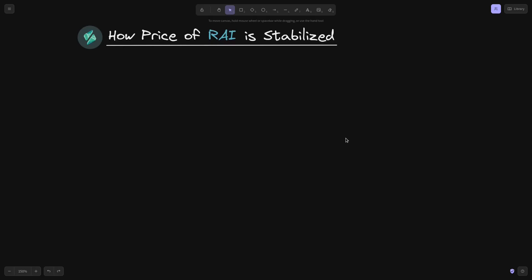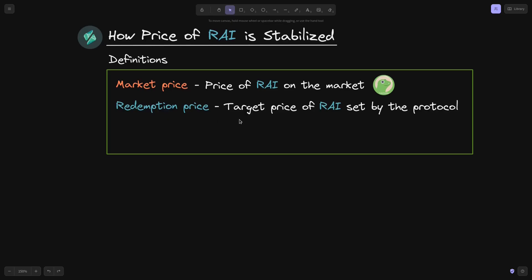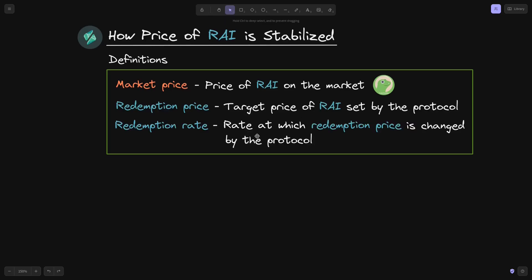The topic of this video is how the price of Rye is stabilized. The market price is the price of Rye on the market — for example, the price you see on CoinGecko, centralized exchanges, or a DEX like Uniswap. The redemption price is the target price of Rye set by the protocol. The redemption rate is the rate at which the redemption price is changed by the protocol.